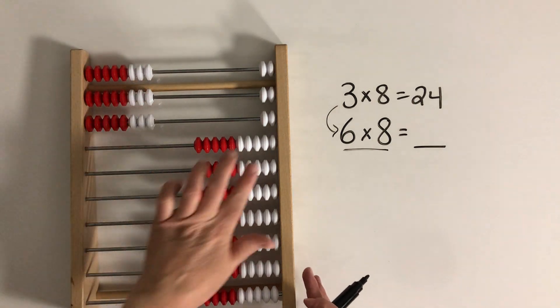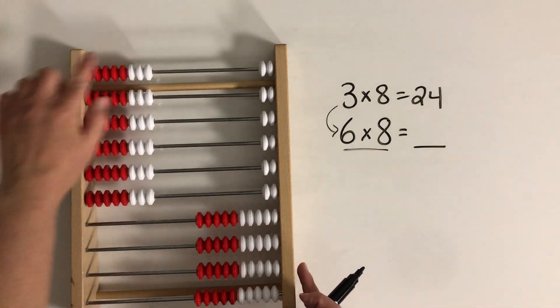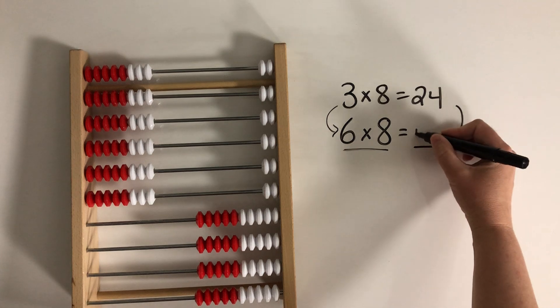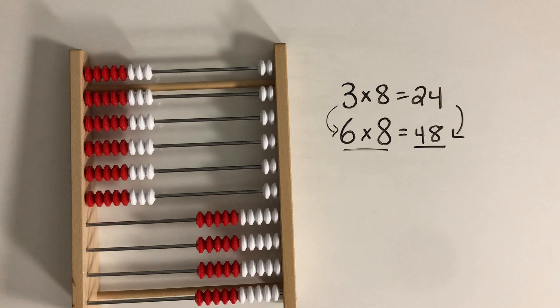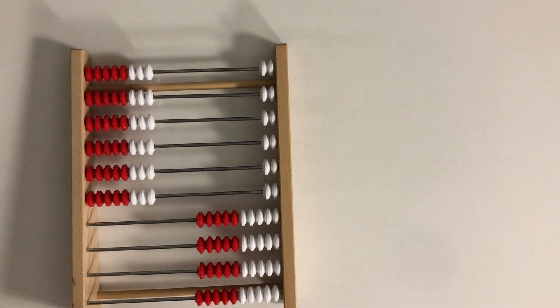Because I've got 3 rows, I just want to put 3 more rows. So I doubled the amount of beads. So I could double this product. So 48 is the double of 24. Let's do one more like that so that you can see the relationship between 3 and 6.